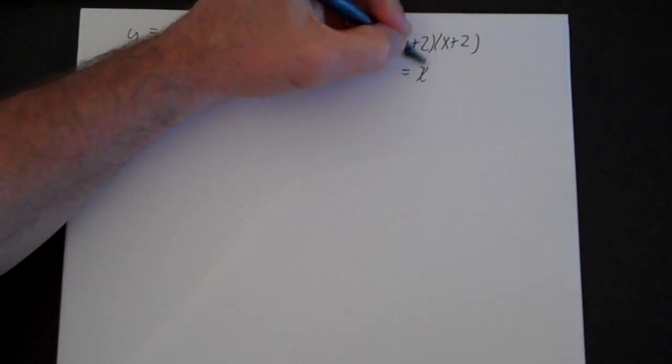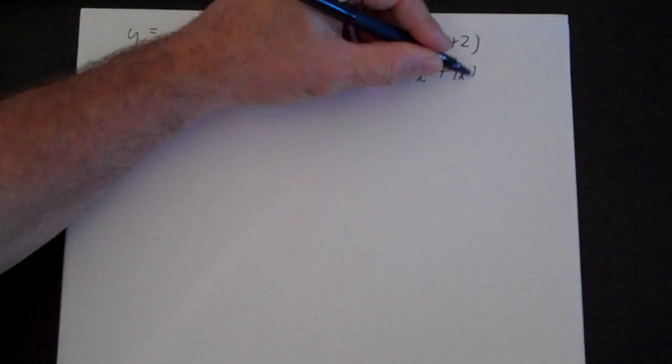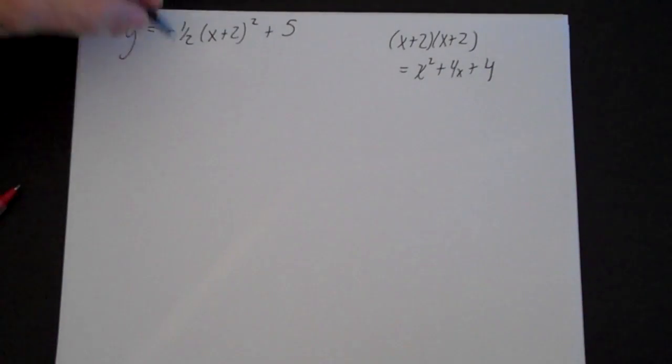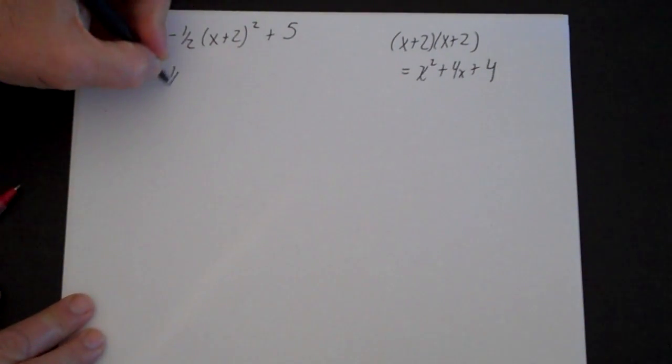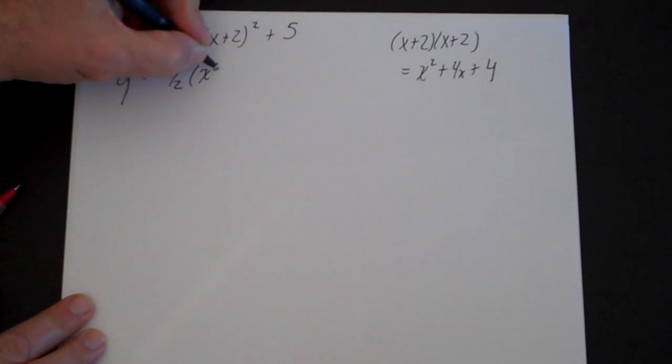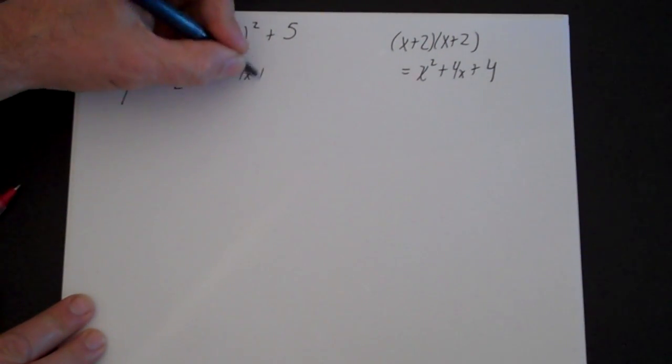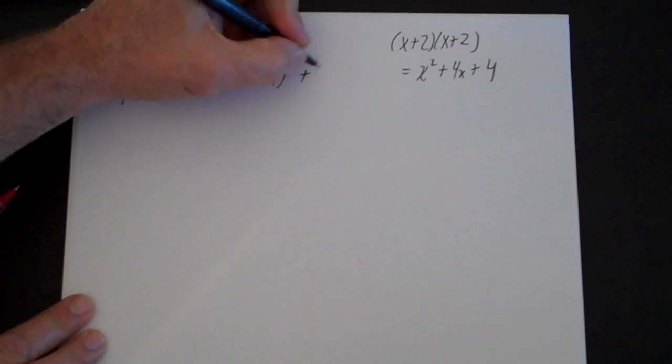So you have to do the power first. So that is (x + 2)(x + 2). We just FOIL that out and we get x² + 4x + 4. So -1/2(x² + 4x + 4) + 5.